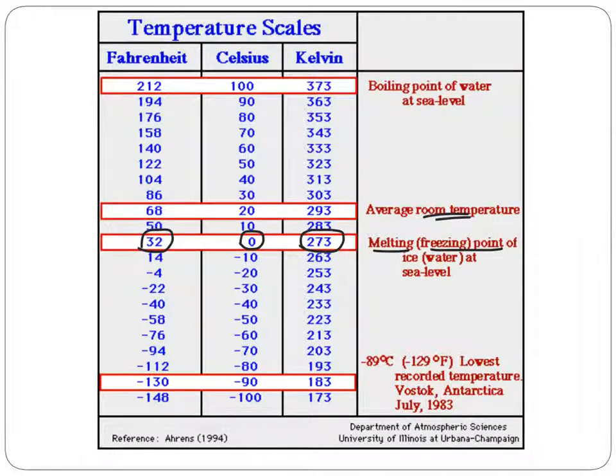Room temperature, we use that a lot in lab, it's about 20 degrees Celsius, 68 or so Fahrenheit, and 293 Kelvin. The boiling point of water, 100 degrees Celsius, 212 Fahrenheit, and 373 Kelvin. The coldest temperature that was ever recorded in Antarctica was a negative 89 degrees Celsius, which is a cold negative 130 degrees Fahrenheit. But it was only 183 Kelvin, because remember there's no negative numbers.